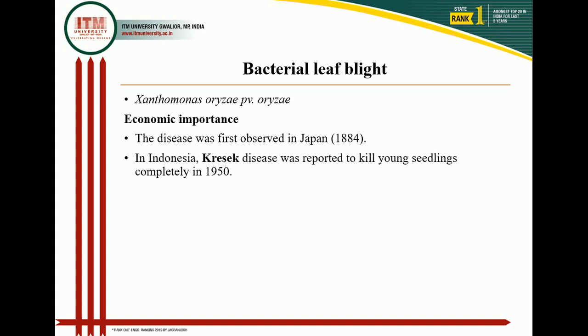Economic importance: this disease was first observed in Japan in 1884. In Indonesia it is called the kresek disease, and it was reported to kill young seedlings completely. In India, bacterial leaf blight was first reported in 1959, with severe outbreak in Bihar and Uttar Pradesh in 1963. Losses in severely diseased fields range from 20 to 30 percent and occasionally 50 percent. In India, millions of hectares are infected every year with losses as high as 60 percent in some states. TN1 is a highly susceptible variety to bacterial leaf blight.